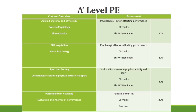I'm going to go through the table on slide two and explain how this course is structured and how it is broken down in terms of assessment. Looking at the content overview on the left, the first box covers applied anatomy and physiology, exercise physiology, and biomechanics — referred to as component one. The assessment paper is called Physiological Factors Affecting Performance, worth 90 marks, a two-hour written paper, and 30% of the overall qualification mark.